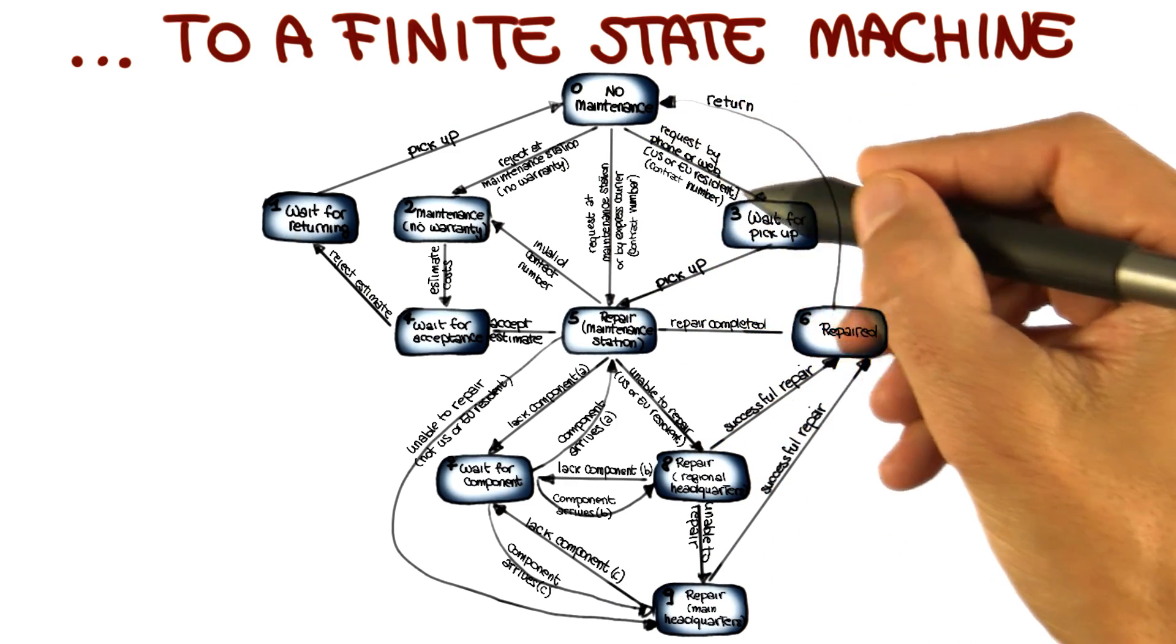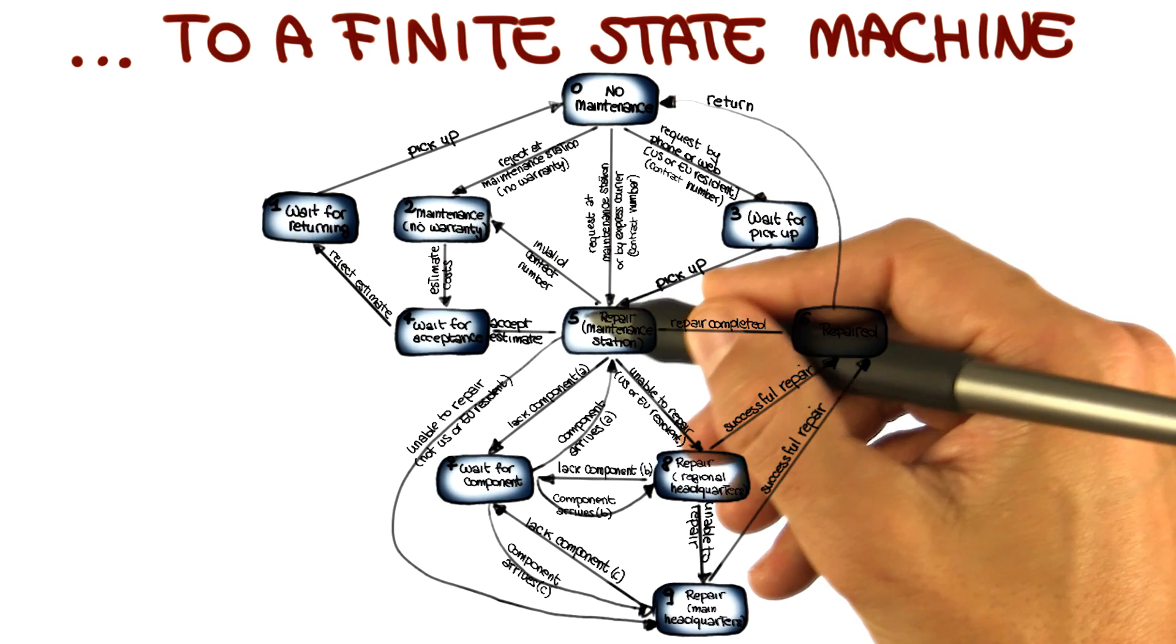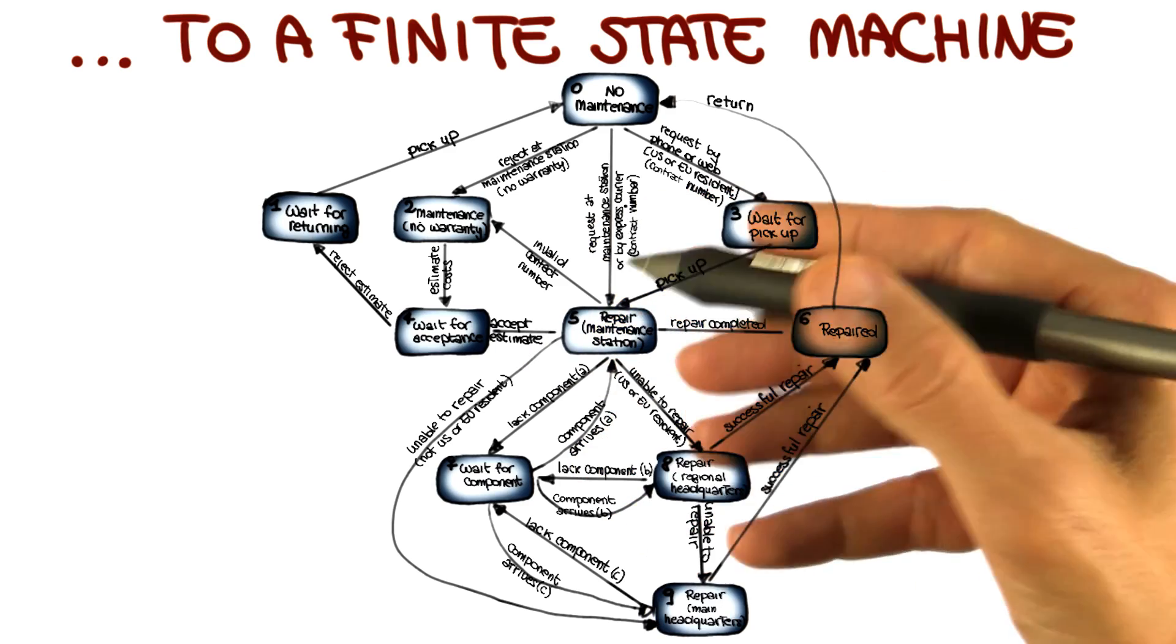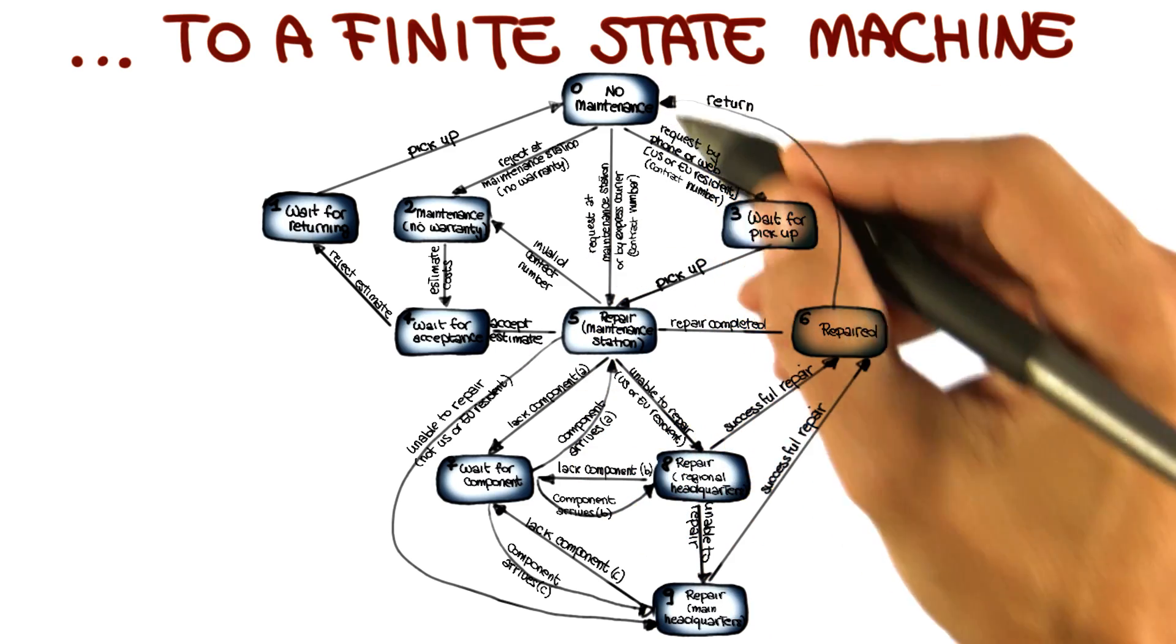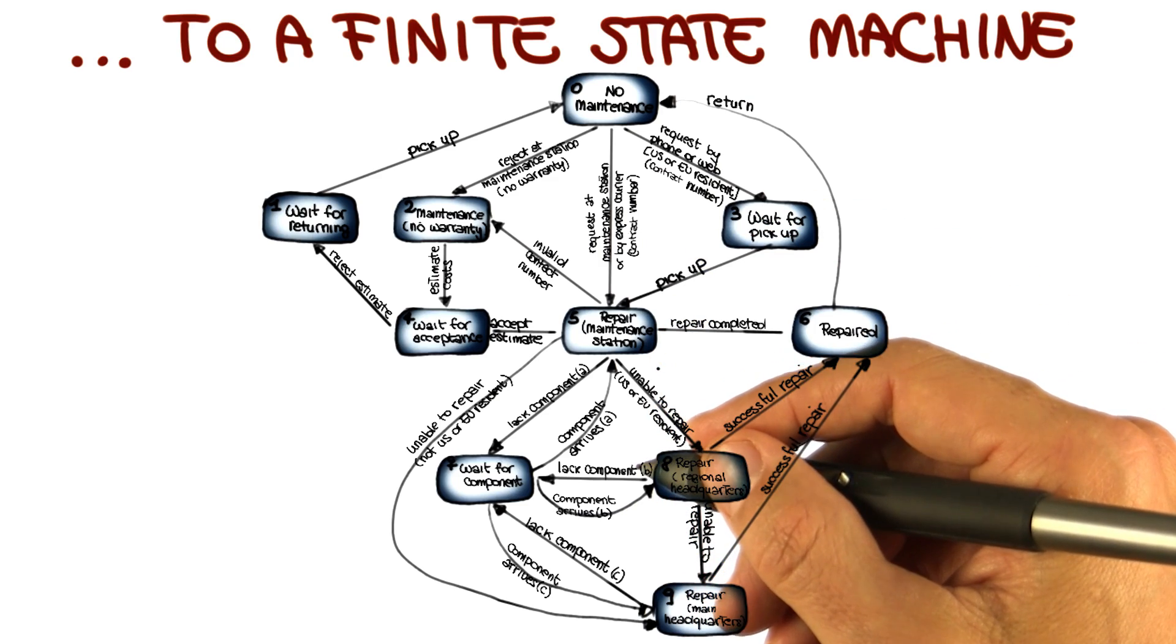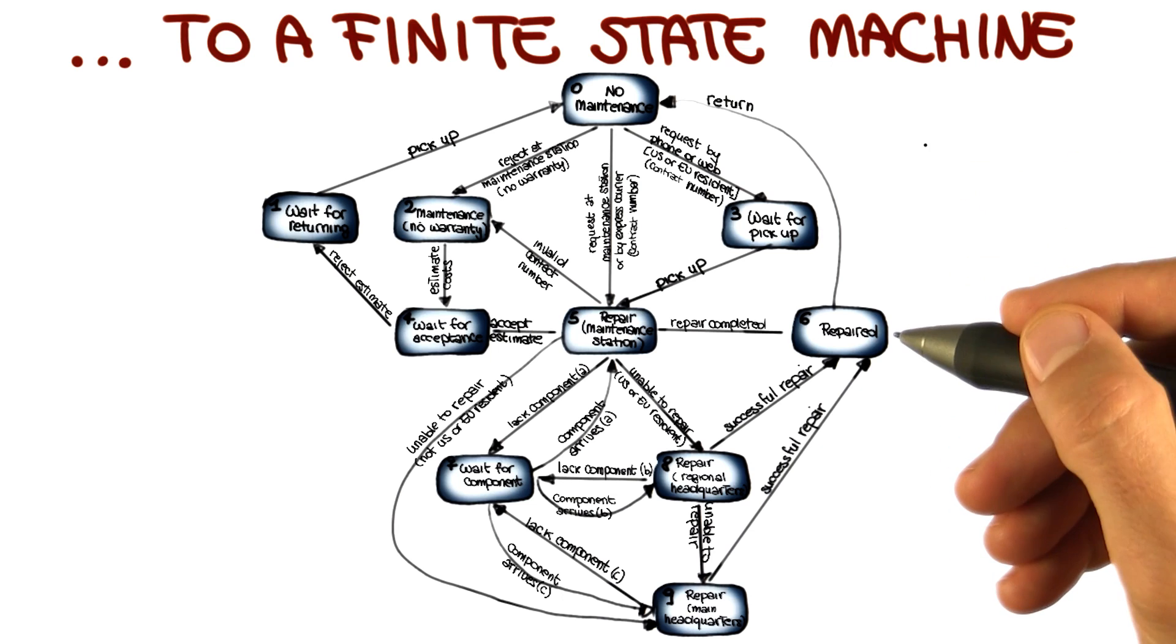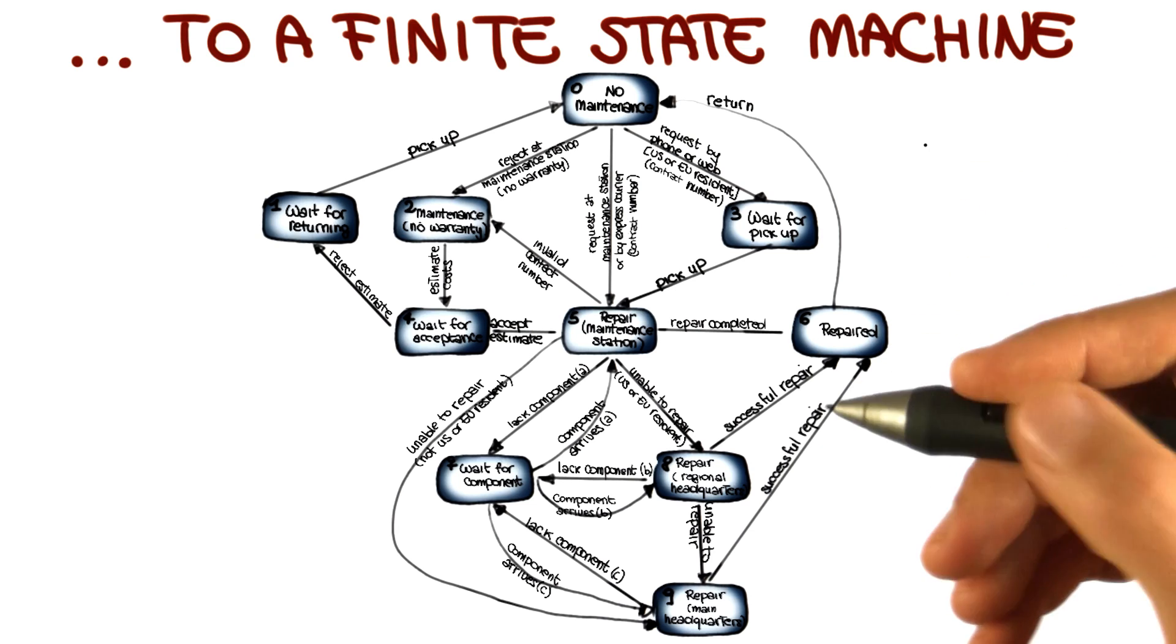And if a request comes in, the system will move to wait for pickup. Then if the pickup actually occurs, the system will move to the repair state, and so on and so forth. So this is just a more systematic representation of what was in the informal specification. And I will argue that this is much easier to understand, at least for somebody who has to develop tests for this system.